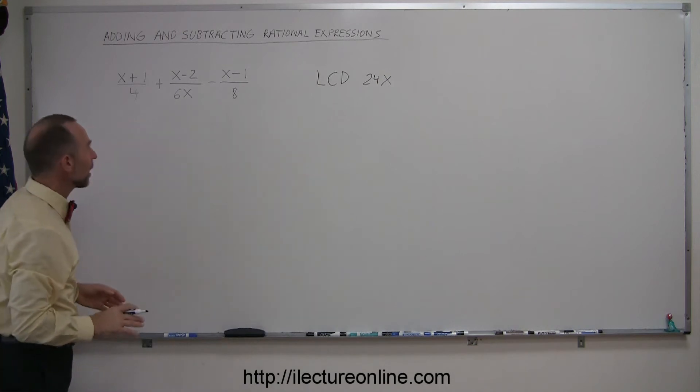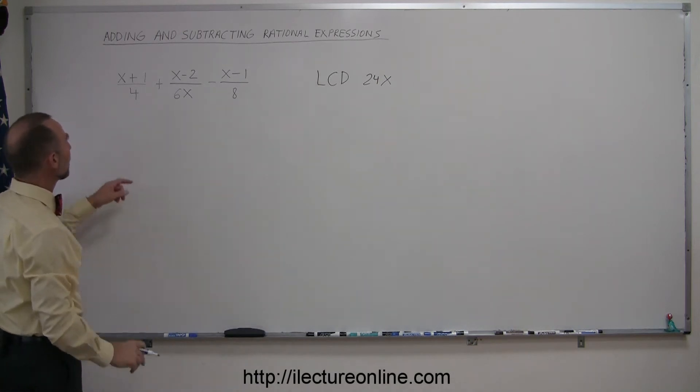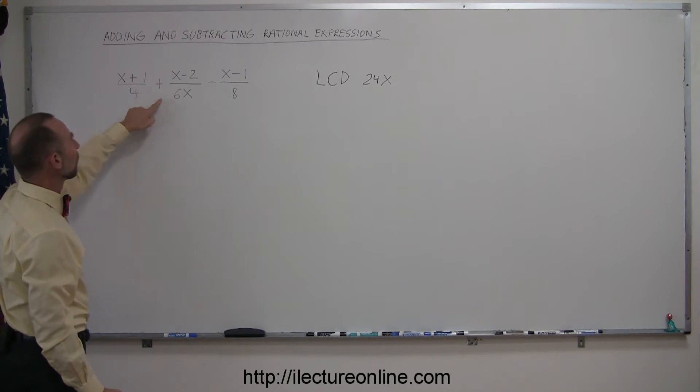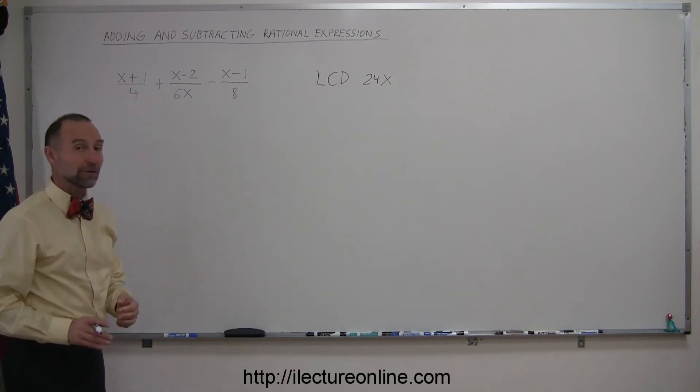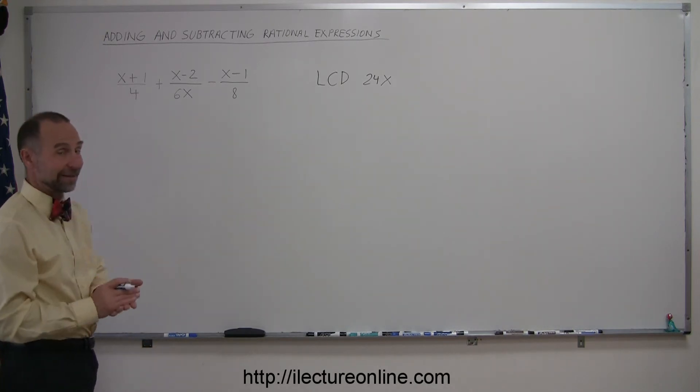So now we have to make every denominator equal to 24x. That means we have to multiply this one by 6x, multiply this one by 4, and multiply this one by 3x. Of course, whenever you multiply the denominator by something, you must multiply the numerator by the exact same thing.